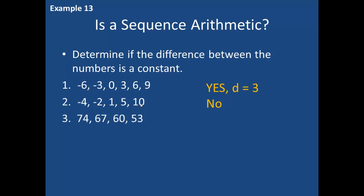In the third example, starting at 74 and progressing to 67, 60, and 53, take a moment to determine if the difference between each number is constant. The difference from 74 to 67, from 67 to 60, and so on is minus 7. This is constant, so yes, it is arithmetic, and the common difference is negative 7 because I am subtracting 7 to get the next term.